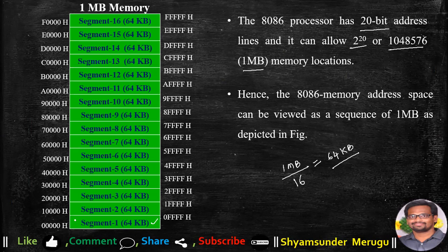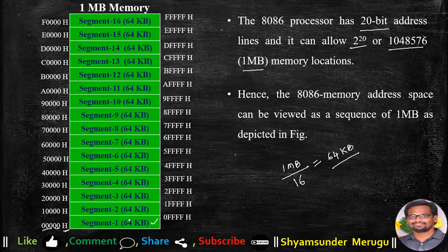Each segment has a starting address as well as an ending address. Segment 1 starts at address 00000H and ends at 0FFFFH. The second segment starts right after the end address of segment 1, so segment 2 starts at 10000H and ends at 1FFFFH. Like that, each and every segment has a starting and ending address, all represented in hexadecimal.